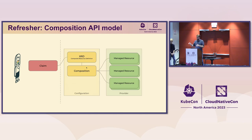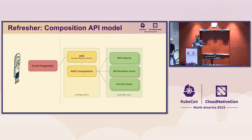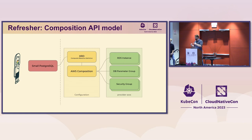A Crossplane composition that you, the platform engineer, authored will specify the resources that compose the high-level abstraction the developer is asking for. To make that more tangible: the developer only worries about their deployment, service, and app resources — plus needing Postgres. In the same way they create their app deployments and containers, they create a Postgres instance, which is a simple abstraction of a platform API that the platform engineer has composed together.